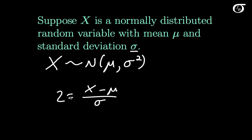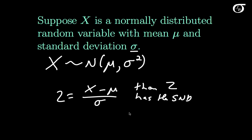I'm going to call this Z. If we let Z equal X minus mu over sigma, then this random variable Z has the standard normal distribution — I'll write that as SND to save writing. In other words, Z is distributed normally with a mean of 0 and a variance of 1, equivalently a standard deviation of 1.